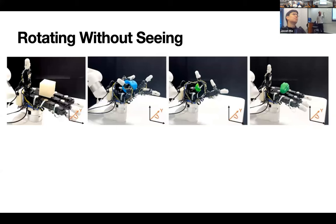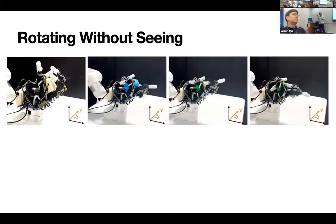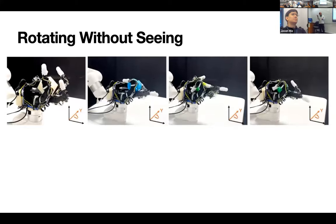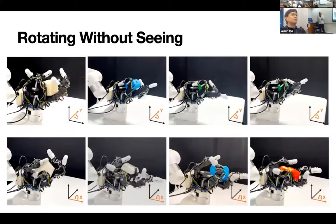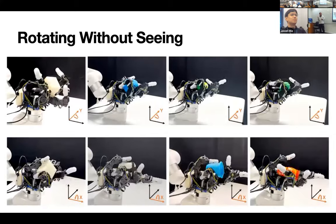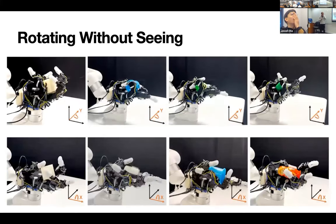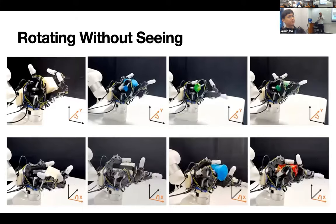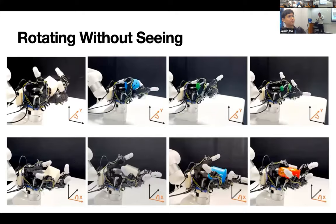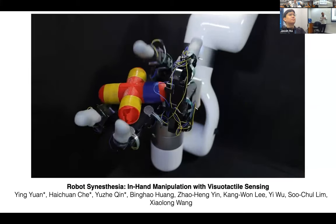We also have other axes — not just rotating on the Z axis. You can do the Y axis direction, and also the X axis. It's a chain of different policies — one direction, one policy. We recently incorporated vision as well — point cloud sensing — so we can now rotate more than just convex objects.